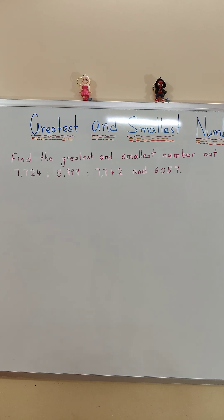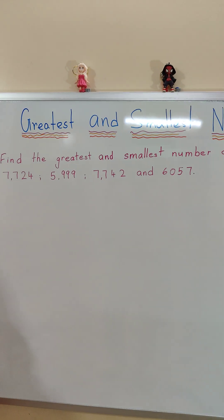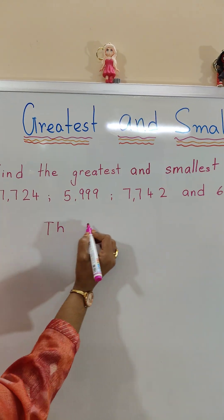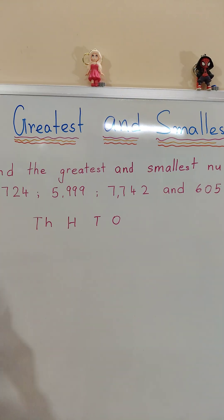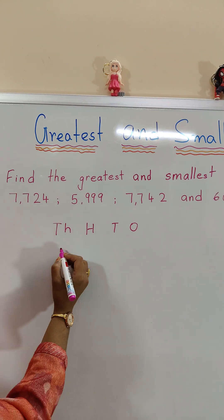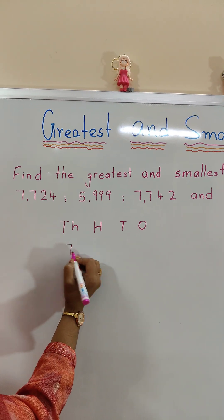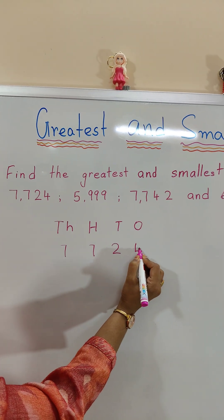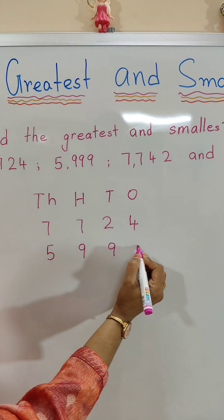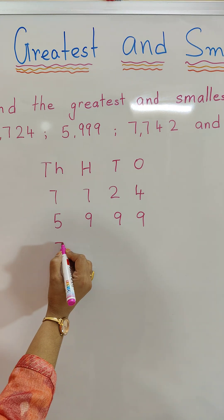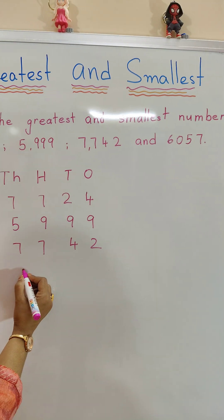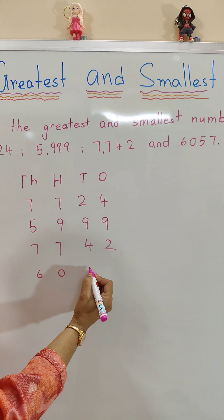To compare the numbers, we will write them one after the other. There are four-digit numbers with places: thousands, hundreds, tens, and ones. The first number is 7724, the next is 5999, the third is 7742, and the last is 6057.